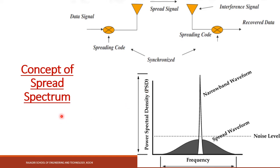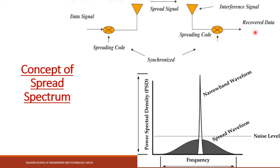Now we will look at the concept of spread spectrum using a diagram. At the transmitter side, the information signal to be transmitted is multiplied by a spreading code which is unique to each user. This increases the bandwidth of the transmitted signal, and the spread spectrum modulated signal then propagates through the channel and reaches the receiver. At the receiver, the received signal is multiplied by a spreading code. Only the desired receiver will have an exact replica of the spreading code used at the transmitter, so on multiplying the received signal with an identical spreading code, the original data can be recovered.